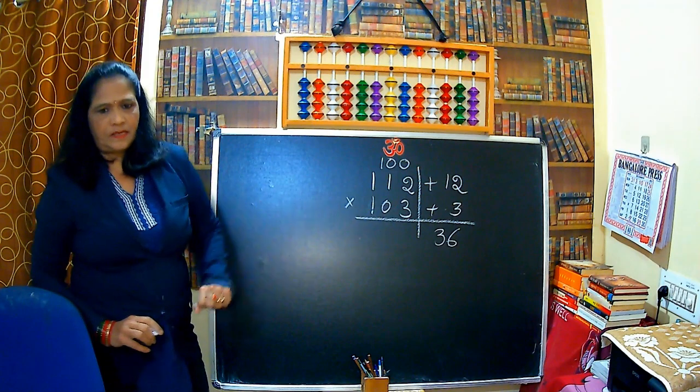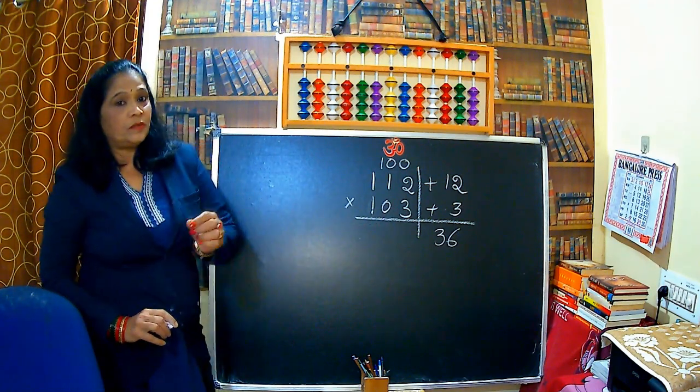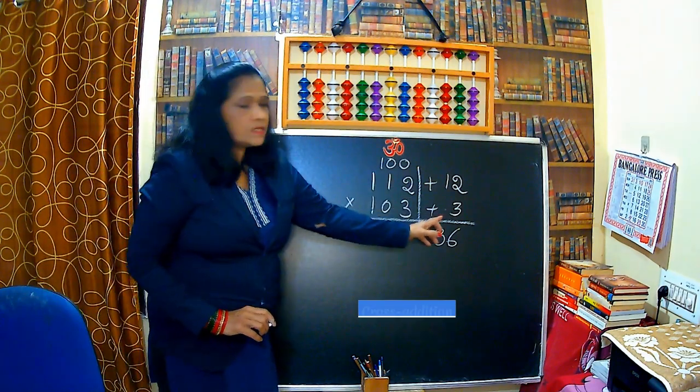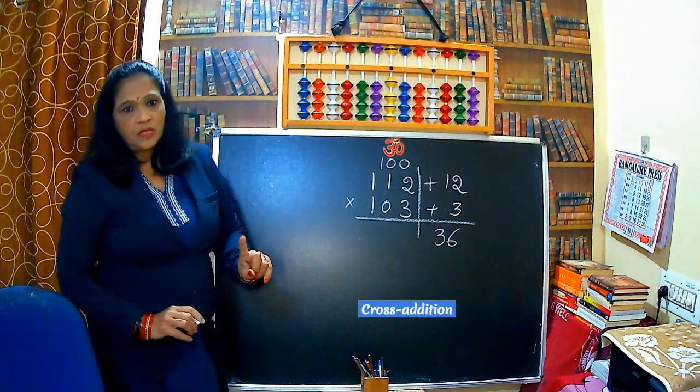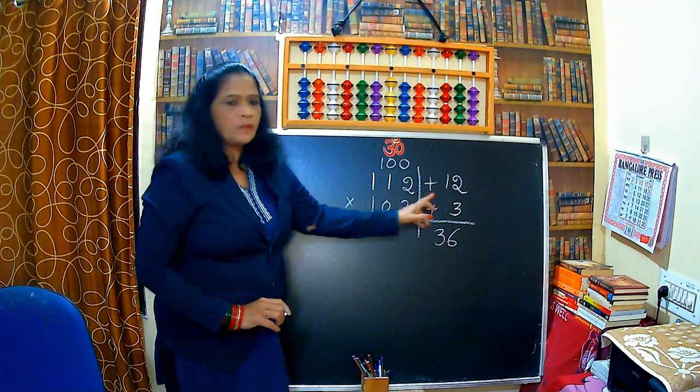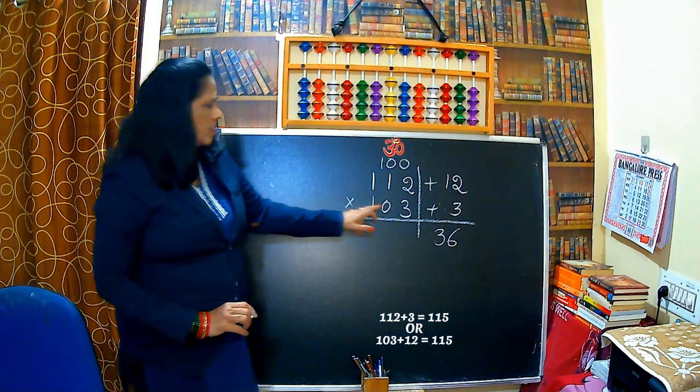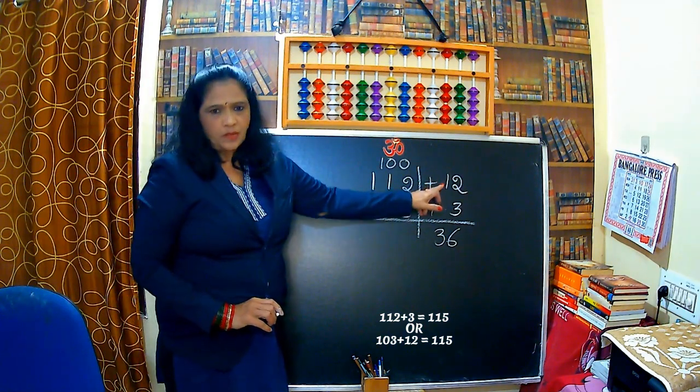That is in the right hand side. Now let us see in the left hand side what we have to do. In the left hand side, do the cross addition, not multiplication. Cross addition. 112 plus 3, that is 115, or 103 plus 12.